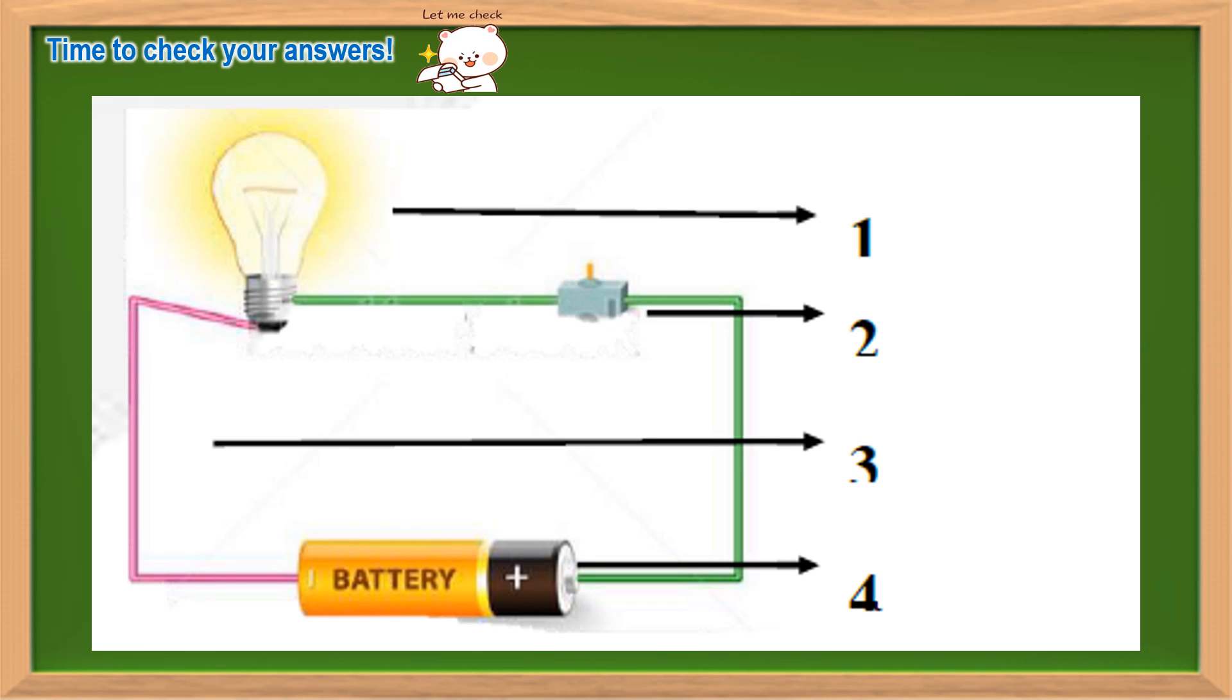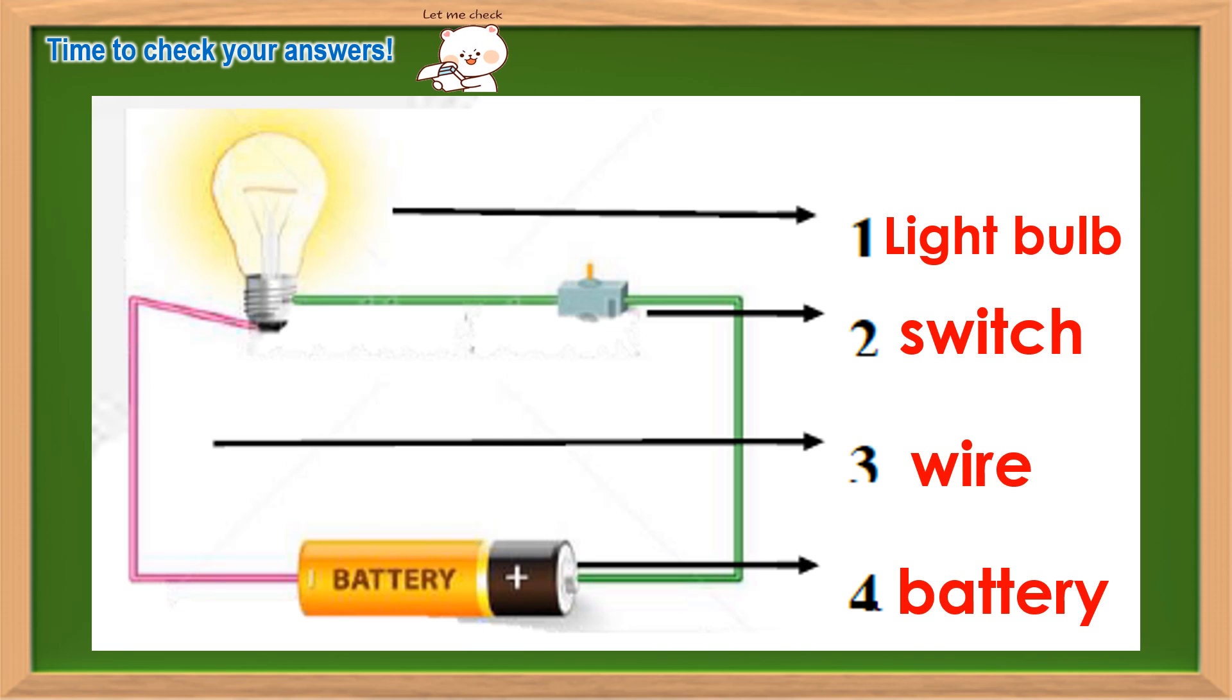Let's check your answer. Number 1, the correct answer is light bulb. Number 2, switch. Number 3, wire. Number 4, battery.